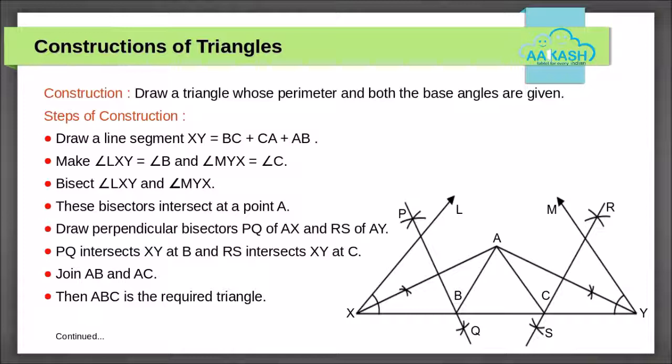In the third construction, we will construct a triangle whose perimeter and two base angles are given. Draw line segment XY which equals the sum of all the sides, that is the perimeter of the required triangle. Make angle LXY equal to angle B and angle MYX equal to angle C. Bisect angle LXY and angle MYX. These bisectors intersect at point A. Draw perpendicular bisectors PQ of AX and RS of AY. PQ intersects XY at point B and RS intersects XY at point C.